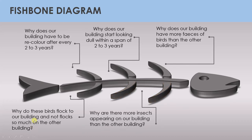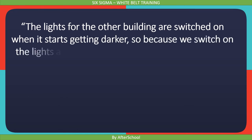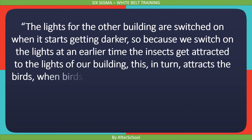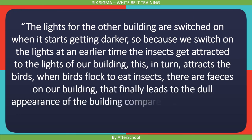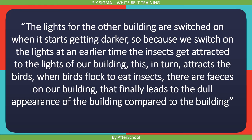The administrator then asked the fifth why question: why are there more insects appearing on our building than the other building? The answer: because we switch on the building lights at 6 p.m., which is earlier than the other building. So the analysis is: because we switch on the lights at an earlier time, insects get attracted to the lights of our building, which in turn attracts the birds. When birds flock to eat the insects, there are feces on our building that finally leads to its dull appearance compared to the other building.